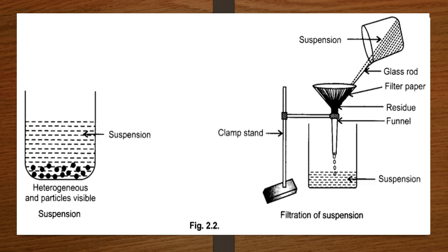Now let us talk about the filtration of suspension. As I said, when you add chalk to water it settles at the bottom since it does not dissolve in the solvent. If we pass the suspension through a funnel with a filter paper, we will see that the solvent passes through the filter paper but the solute remains as a residue in the filter paper. So we can separate the solute particles of suspension from the solvent.